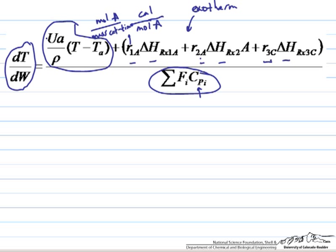The final term in the energy balance is the heat transfer term arising from the cooling water on the shell side of the tube-and-shell reactor. This should carry a negative sign because the cooling effect decreases the reactor temperature. The term involves U (the overall heat transfer coefficient, computed from individual heat transfer resistances on tube, wall, and shell sides), the catalyst density, and a geometric factor a — the heat transfer surface area per volume of catalyst divided by density, giving surface area per kilogram of catalyst, which is what is needed for dT/dW.